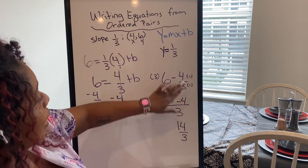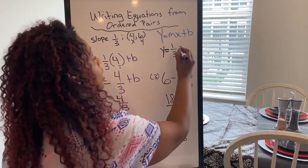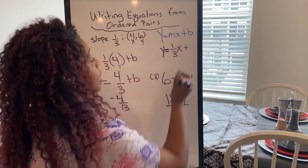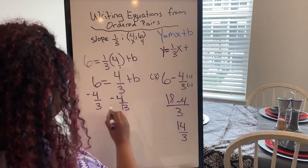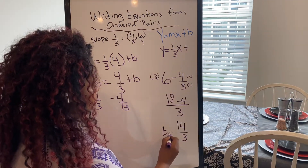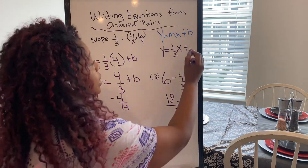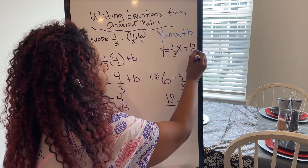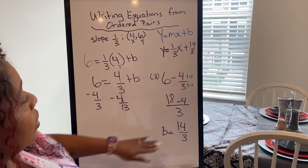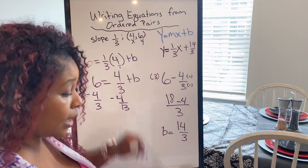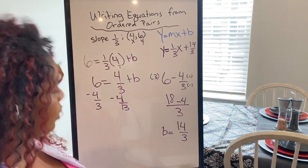What is 18 minus four? I'm going to get 14 over three. So when I come back up here, I'm going to say this plus, and then my final y-intercept is 14 over three. That's how you do this — that's how you solve one of these. We'll do another one.